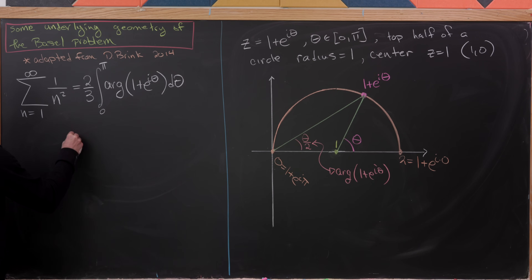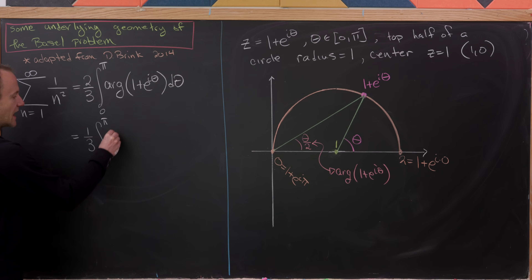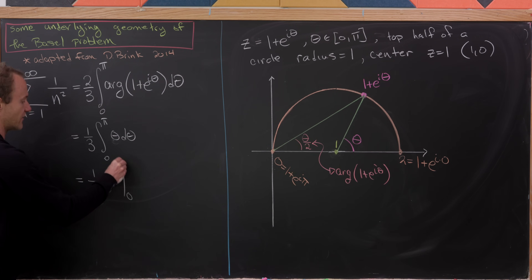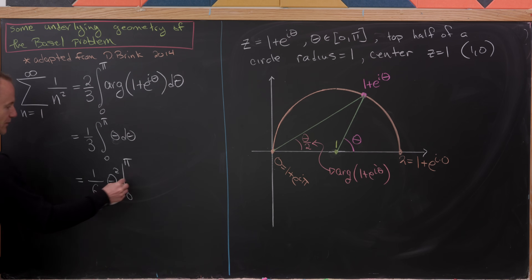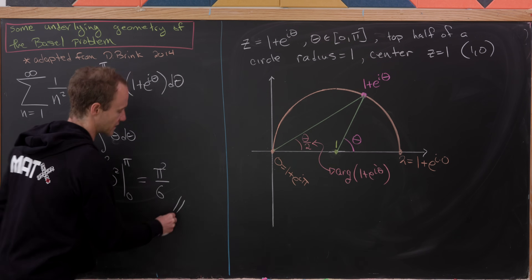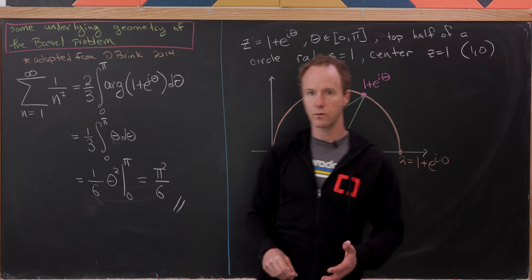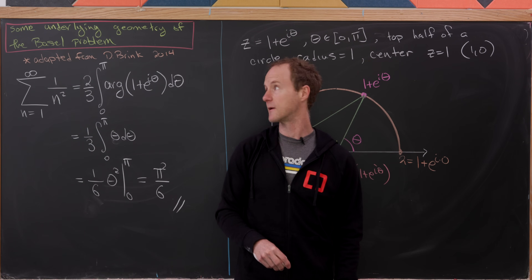Replacing arg(1 + e^(iθ)) with θ/2 in our integral: 2/3 · integral from 0 to π of θ/2 dθ = 1/3 · integral from 0 to π of θ dθ = 1/3 · [θ²/2] from 0 to π = 1/6 · π² = π²/6. This is famously the value of the sum of the reciprocal of the squares, and we've obtained it with a beautiful geometric picture underlying the whole argument.